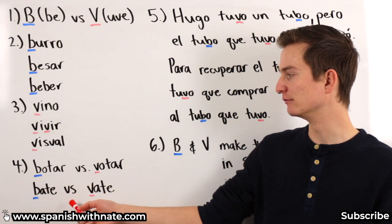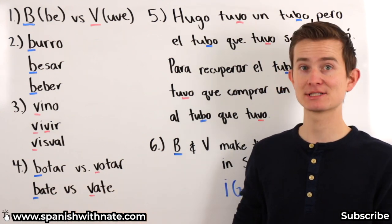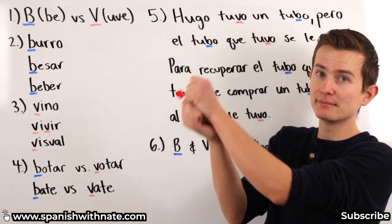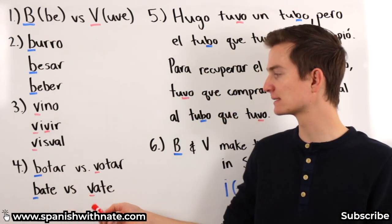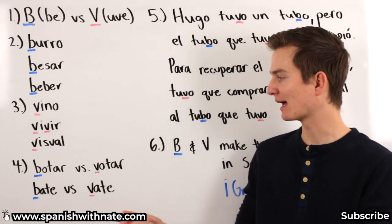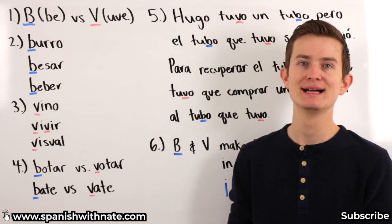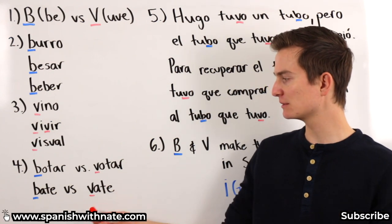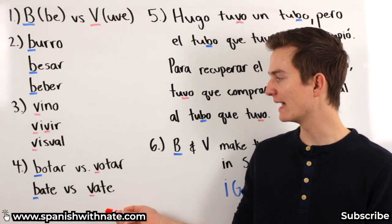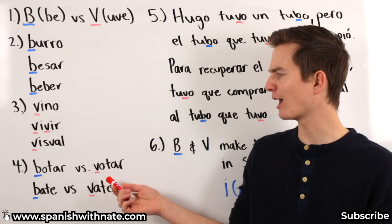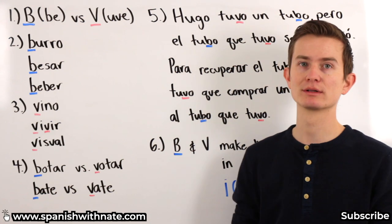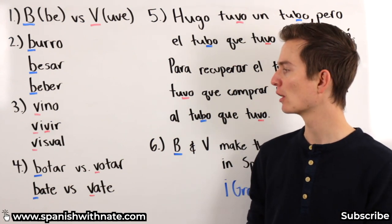Another case: bate versus vate. Same exact pronunciation — bate. Bate meaning a bat, versus vate meaning a bard or a poet, someone who recites poetry. Frankly, I'll be honest, a lot of times you're not going to hear the word vate. You'll more often encounter botar versus votar, but these words are still used somewhat frequently in Spanish.